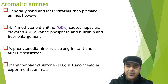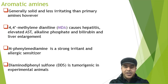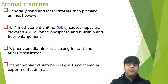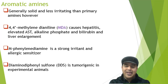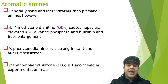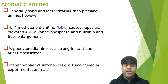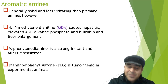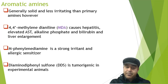Aromatic amines are generally solid in nature and are less irritating than the primary amines. However, 4,4-methylenedianiline, known as MDA, generally causes hepatitis, elevated ATS, alkaline phosphatase, and bilirubin, and is basically involved in liver enlargement when people get exposed to it.